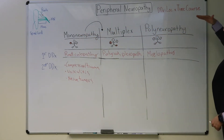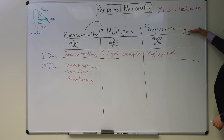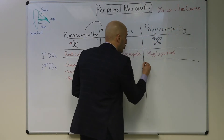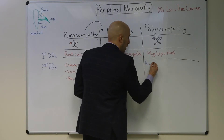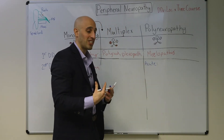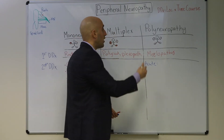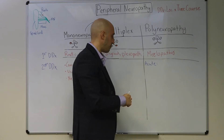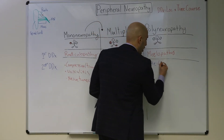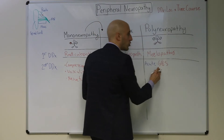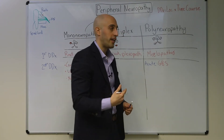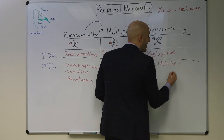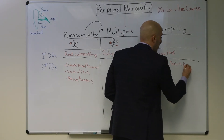When we approach the differential diagnosis of polyneuropathy, we incorporate our time course. Acute causes — meaning hours to days — present with acute symmetric sensory-motor symptoms. This can be Guillain-Barré syndrome and its variants, also known as acute inflammatory demyelinating polyneuropathy, toxins like arsenic and thallium, and acute intermittent porphyria. You see how powerful the time course is?